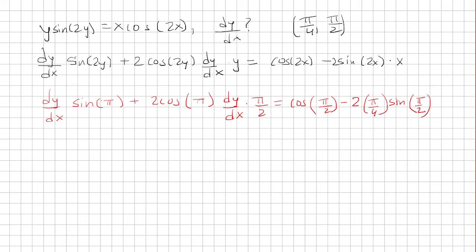Now some things cancel: sine(π) is 0, so that term goes away. Cosine(π/2) is also 0, so that term goes away too. Cosine(π) is negative 1, and sine(π/2) is 1. So we have 2 times negative 1, which is negative 2, times dy/dx times π/2, equal to negative 2·(π/4) times 1, which is negative π/2.